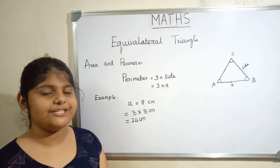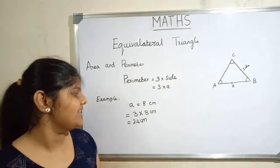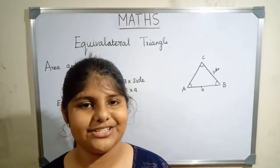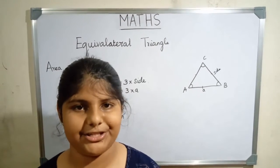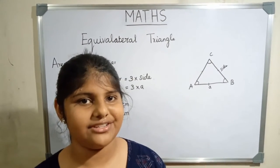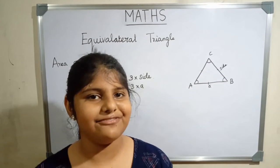The perimeter of the equilateral triangle is 24 centimeters. Hope you all understood how to find area and perimeter of an equilateral triangle. Please like, share, subscribe and comment. Bye friends, thank you.